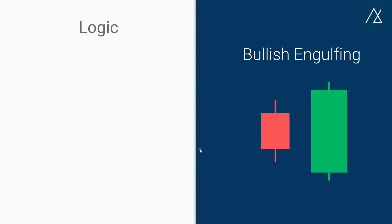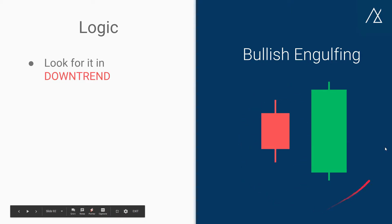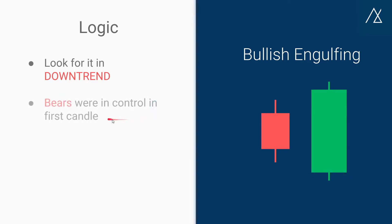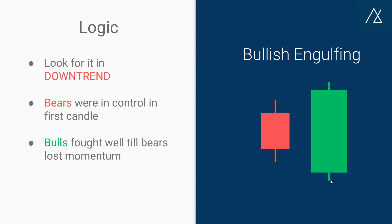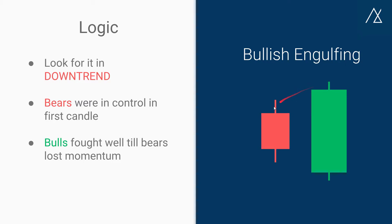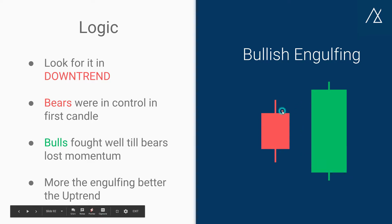The logic behind it: we have to look for a bullish engulfing in a downtrend. The price is falling, we find the first candle, and then the next candle engulfs the previous one — it must meet the condition of red and green. Bears were in control in the first candle; then in the second candle, the bears tried to fight but lost momentum. The bulls took over and closed above the high, making a higher high and a lower low. The more the engulfing, the better the potential uptrend.